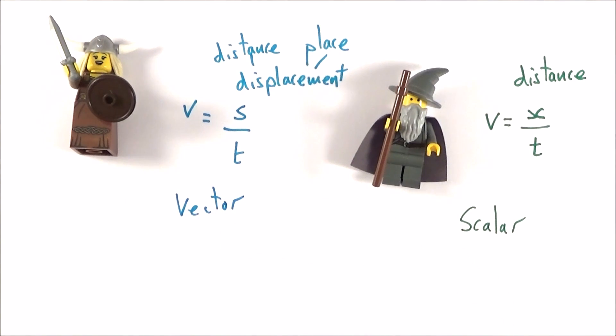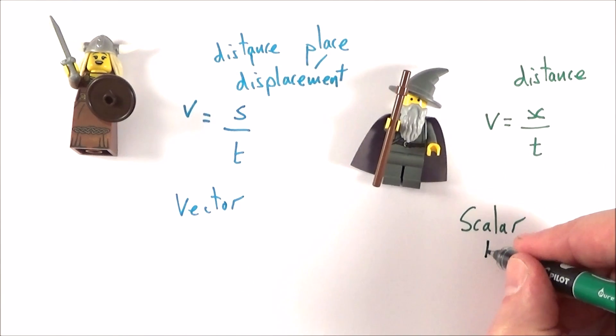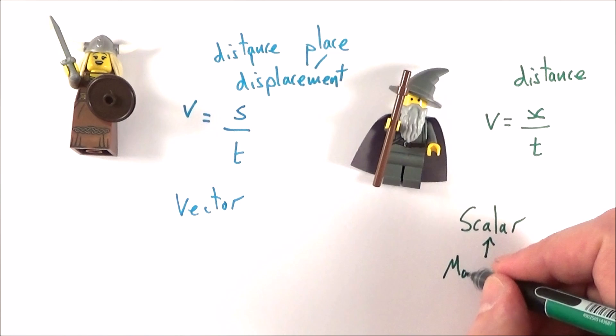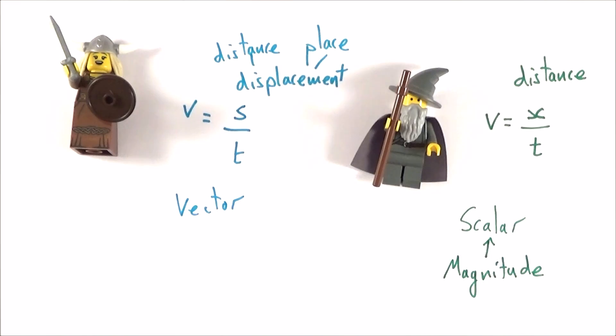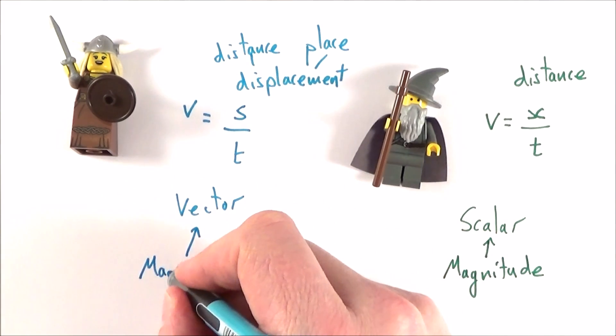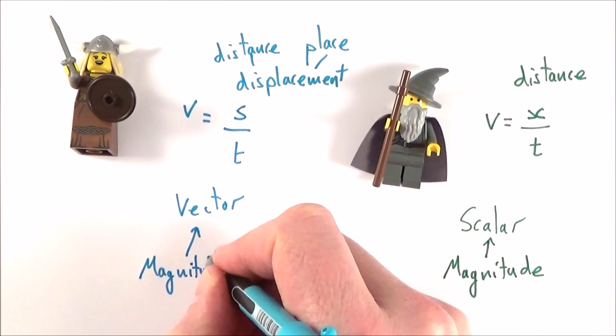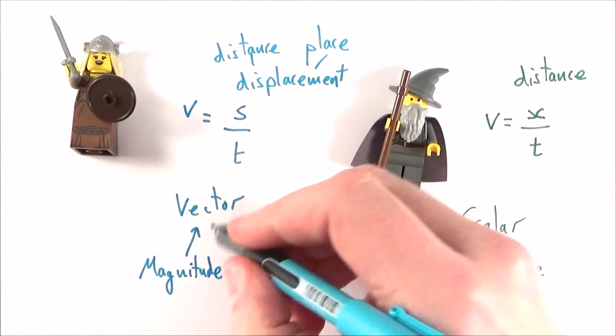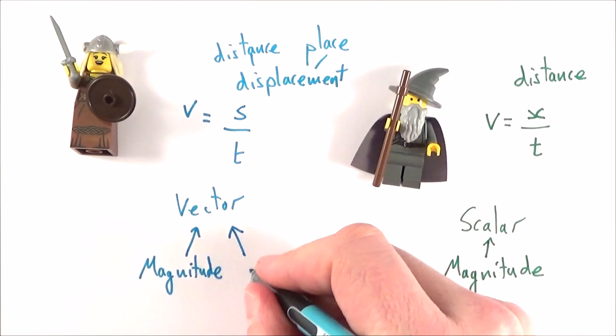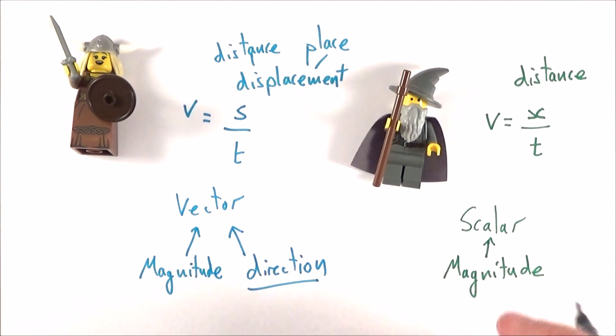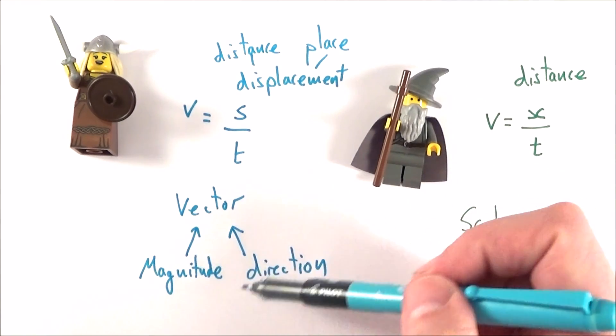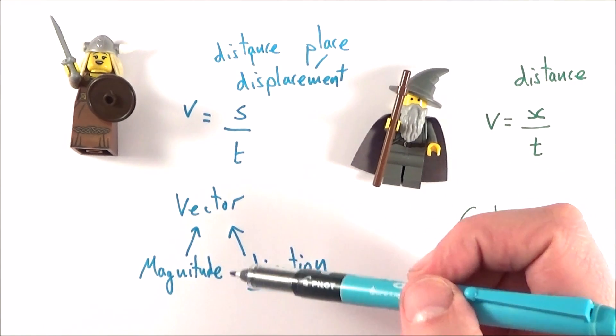Now both of these have a size and we can maybe look at the speed that Gandalf has gone in metres per second. But this scalar quantity is something that has magnitude, which is just a posh word for size. Whereas a vector has both a magnitude, so we can maybe quantify their velocity in metres per second, but more importantly it also has a direction. And it's this direction which is absolutely key. And a quantity or an amount that has just size is a scalar. Something where the direction is important as well is called a vector.